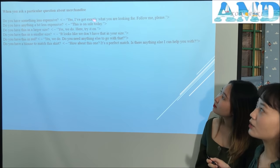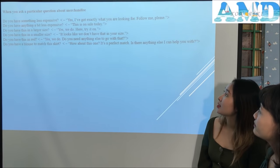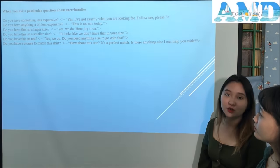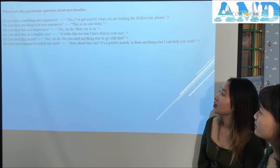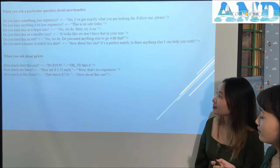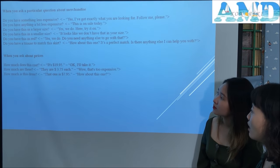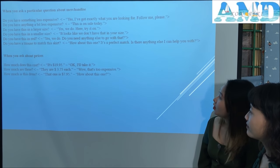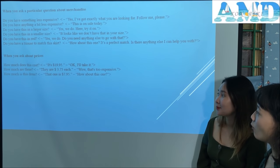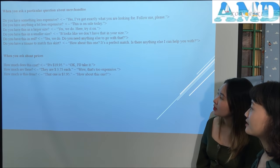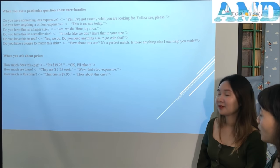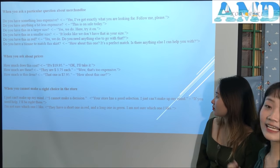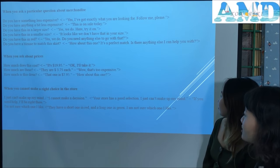When you ask about merchandise: 'Do you have something less expensive?' 'Yes, I've got exactly what you're looking for. Follow me, please.' 'Do you have this in a larger size?' 'Yes, we do. Here, try it on.' 'Do you have this in red?' 'Yes, we do. Do you need anything else to go with that?' When asking about prices: 'How much does this cost?' 'It's $19.95.' 'Okay, I'll take it.' 'How much are these?' 'They are $3.75 each.' 'Wow, that's too expensive.' 'How much is this dress?' 'That one is $7.95. How about this one?' When you cannot decide: 'I just can't make up my mind.' 'Your store has a good selection. I just can't make up my mind.' 'I'm not sure which one I like.'